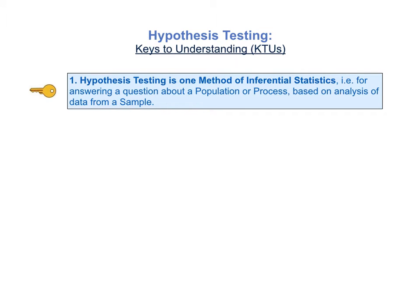As usual, in the book and in these videos, we'll start out with a list of keys to understanding, or KTUs, so that you can see on one page the most important things to understand about the concept. There are five keys to understanding for the concept of hypothesis testing. Let's go through the list fairly quickly and then follow that with a detailed explanation of each key.